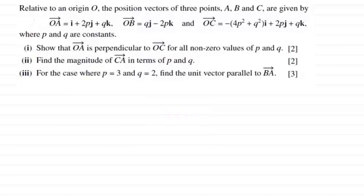For the first one, where we've got to show that the vectors OA and OC are perpendicular to one another, we use the dot product. That is, we would expect the vector OA dotted with the vector OC to equal 0. Now I'm assuming that you're familiar with dotting two vectors together.